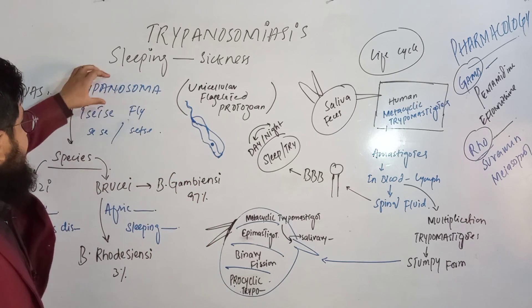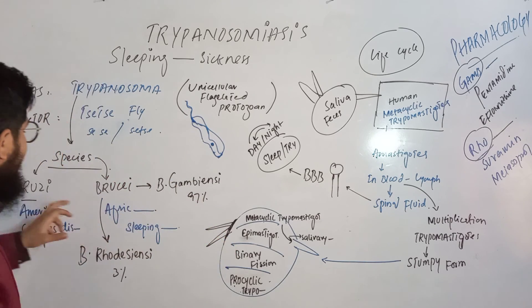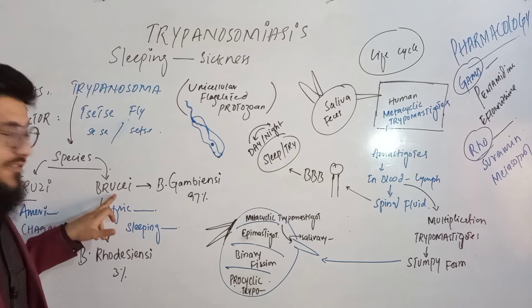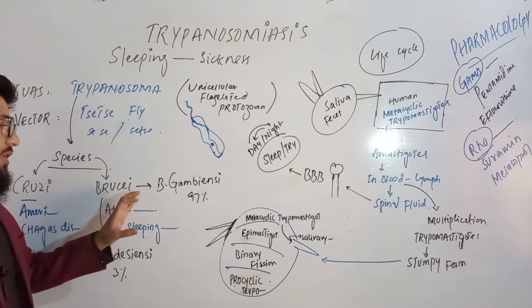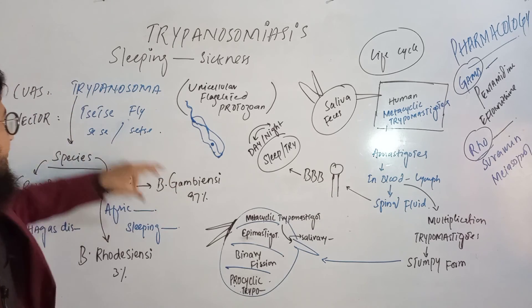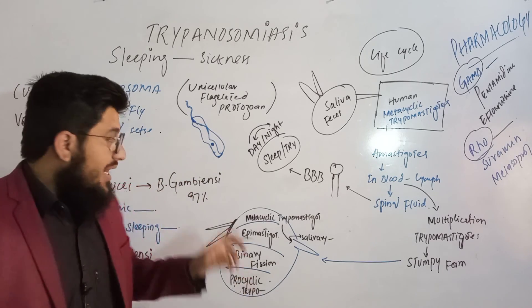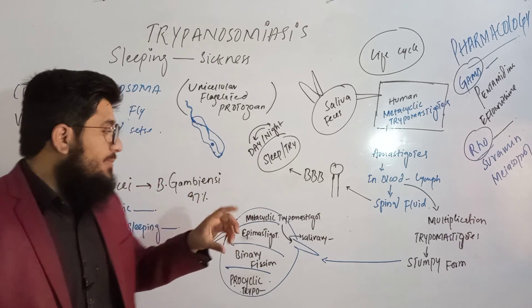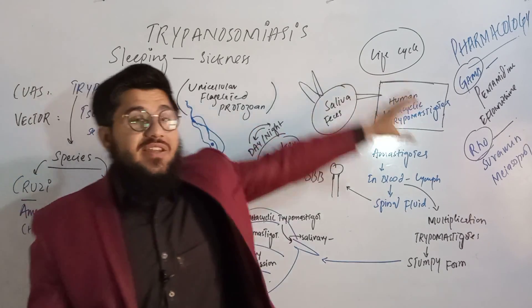Trypanosoma has different species responsible for causing disease in humans — of two types: cruzi and brucei. Cruzi is responsible for causing American sickness, whereas brucei causes African sleeping sickness. Brucei is further composed of two subspecies: Trypanosoma brucei gambiense and Trypanosoma brucei rhodesiense. Gambiense is responsible for 97% of sleeping sickness cases.